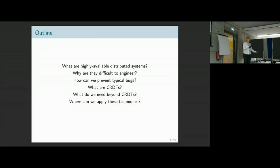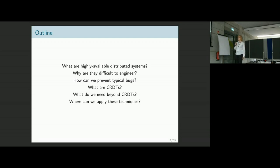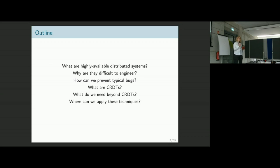Let's start with an outline. I'm going to discuss first what I understand by highly available distributed systems and their characteristics. Then we'll see they're not so easy to program. We'll look at typical bugs and how to prevent them. One mechanism that will help is CRDTs — conflict-free replicated data types. But CRDTs are not always enough, so we'll see what other techniques are available.